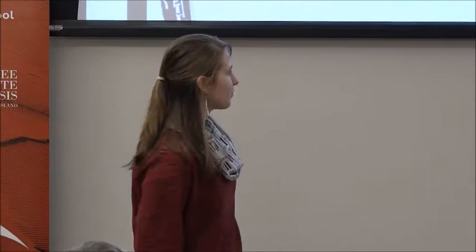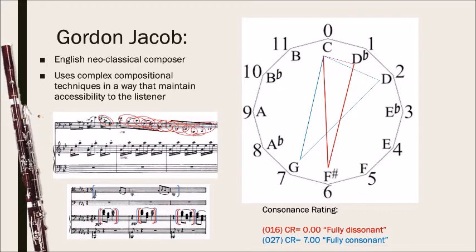These two sets are very different. Music theorist Henry Martin made a musical-mathematical equation to determine the consonance rating of each set. Consonance is what makes music, or a collection of pitches, sound friendly to the ear. The 0-1-6 set has a consonance rating of zero, meaning it's very dissonant and hard to listen to. The 0-2-7 set has a consonance rating of seven, meaning it is fully consonant.